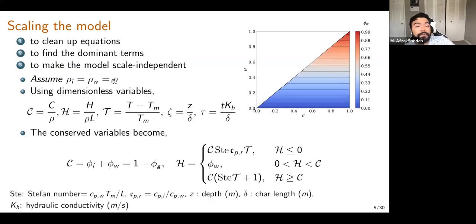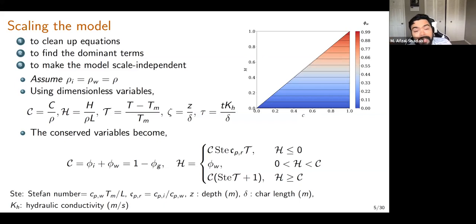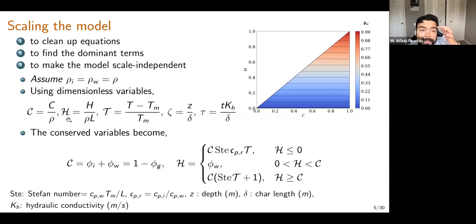For the simple theoretical model, we make the assumption that density of ice equals density of water, equal to rho. We introduce dimensionless variables: dimensionless composition C scaled by water density; enthalpy scaled by density of water times latent heat of fusion; scaled temperature as (T − T_melt)/T_melt; scaled depth z divided by characteristic length Delta; and dimensionless time as time times hydraulic conductivity over Delta.